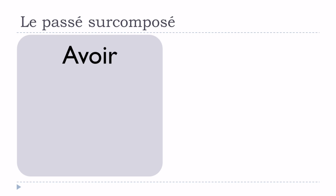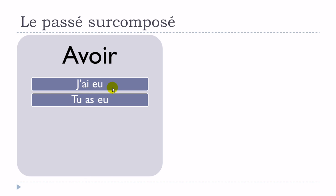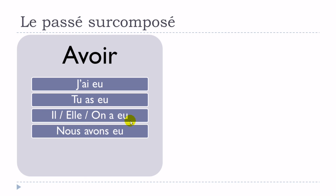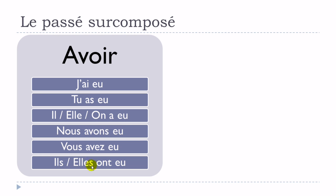Let's refresh avoir and être at the passé composé, since that's the part we need when constructing the passé surcomposé. Avoir at the passé composé: j'ai eu, tu as eu, il/elle/on a eu, nous avons eu, vous avez eu, ils/elles ont eu. This will be the first part of the passé surcomposé in most cases.